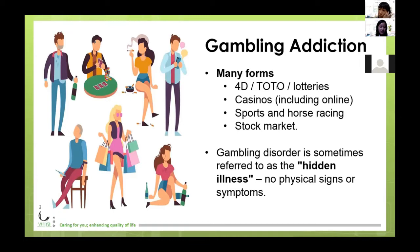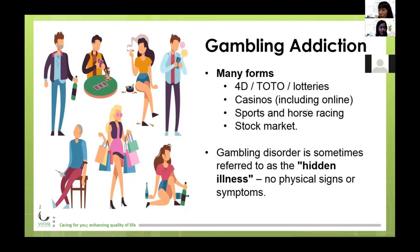For gambling addiction, some of us immediately think about gambling at a casino. But actually there are many forms — it can include 4D, Toto, lotteries, and for casinos it's not just the physical casinos, it can also include online casinos, which means local or foreign online casinos. And then of course sports and horse racing, and some people actually gamble within the stock market as well. Basically, when we talk about addiction, it means that this behaviour takes the person's attention away such that the person can't function normally within their normal life, often at the expense of family relationships and work responsibilities.